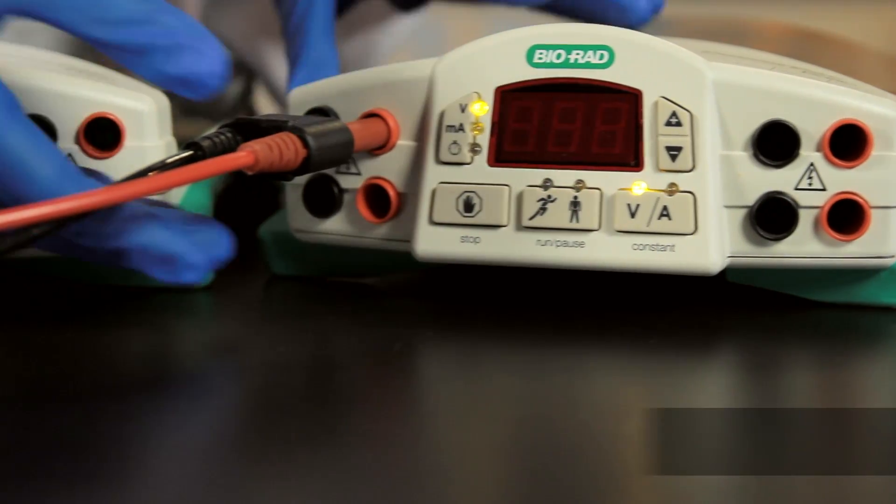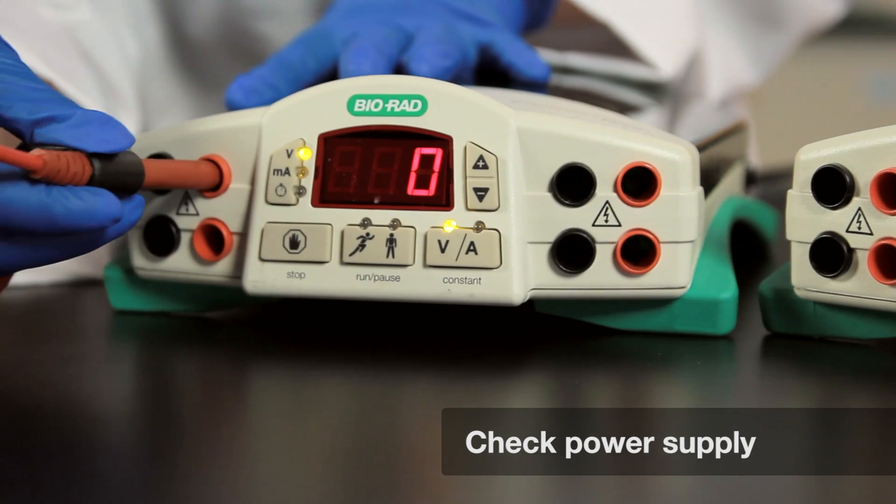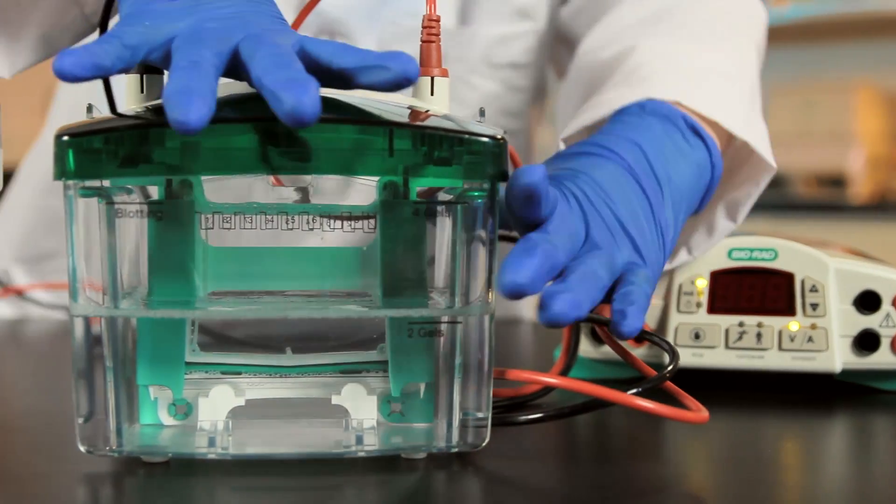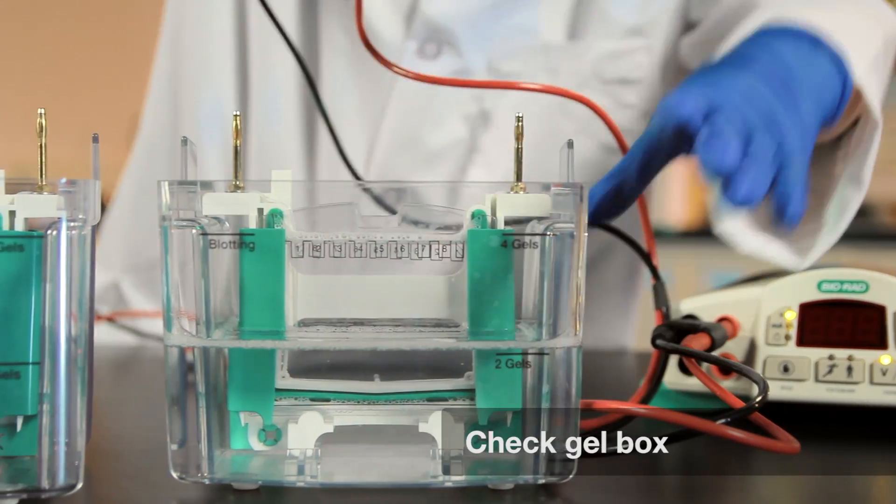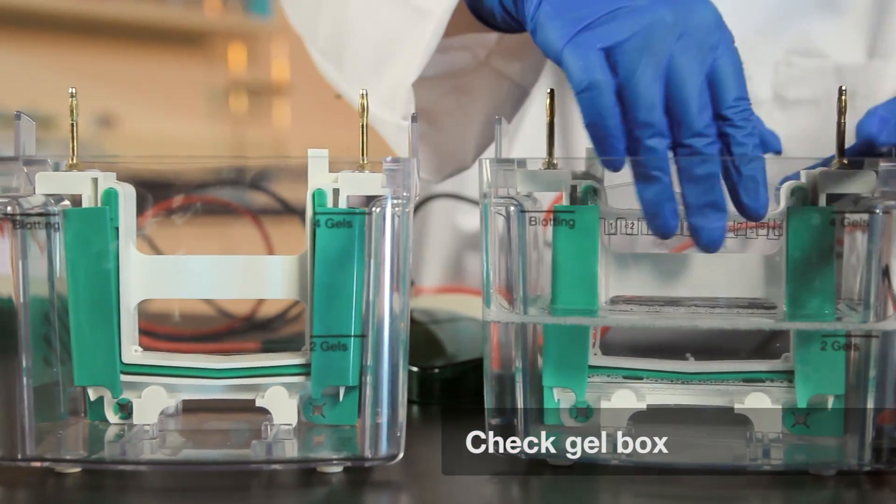Occasionally, the problem is due to a defective power supply. Try running the gel using another power supply to see if the error persists. Or, the problem could be with your gel box. Run the same gel in a different gel box, but with the same power supply to see if the E1 error persists.